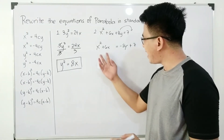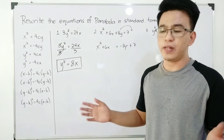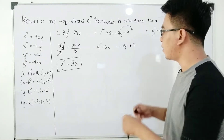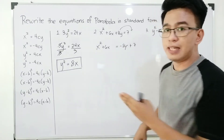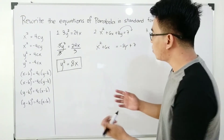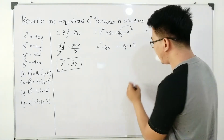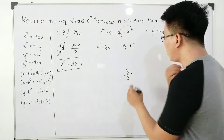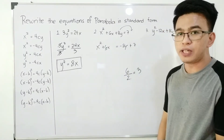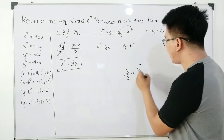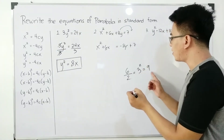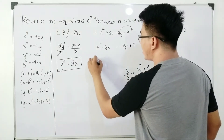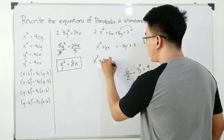We will do completing the square. Our target here is to make this part of the equation a perfect square trinomial. We have x² + 6x. What we need to do is get the coefficient 6, divide it by 2 — the answer is 3 — and then raise the quotient to the power of 2. The answer is 9. So we will add 9 here to make it a perfect square trinomial. It will become x² + 6x + 9.